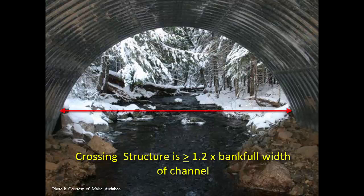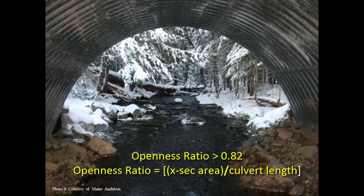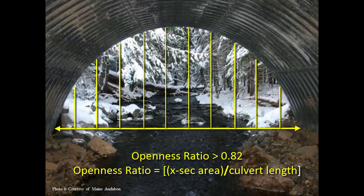The width of the structure is at a minimum 1.2 times the bankful width of the stream channel, and new or replacement stream crossings must have an openness ratio that is greater than or equal to 0.82. The openness ratio is the cross-sectional area of the structure opening divided by the length of the crossing, both measured in the same units such as feet or meters. For a box culvert, the openness ratio equals the height times the width divided by the length.